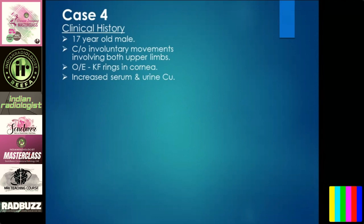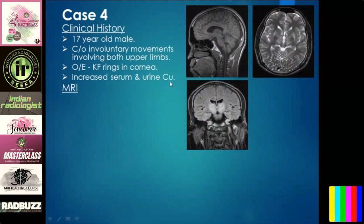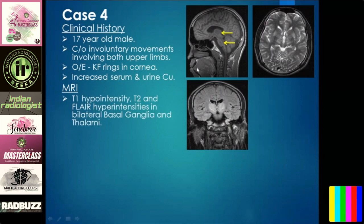Case four: a 17-year-old male with involuntary movements involving both upper and lower limbs. On examination, KF rings are present in the cornea — not many residents actually check the cornea. Most of the time it will be documented in the case sheet. Always check the history. For a young male with involuntary movements, always check serum and urine copper levels and look for any abnormalities in the eyes.